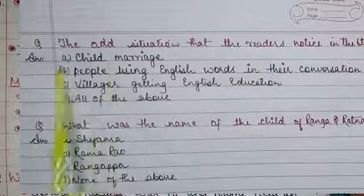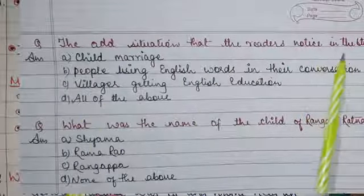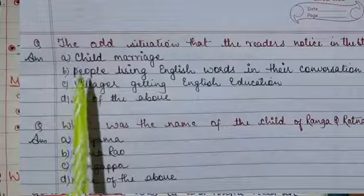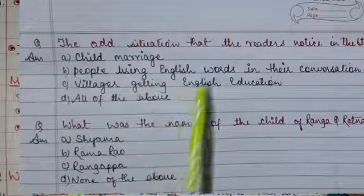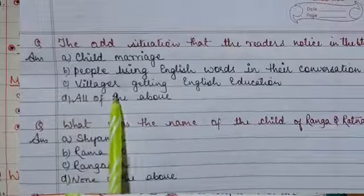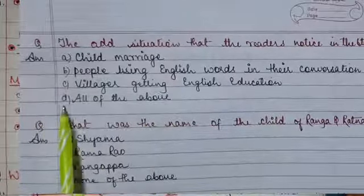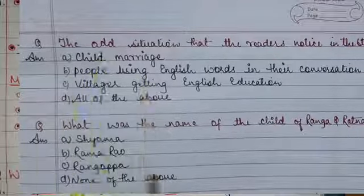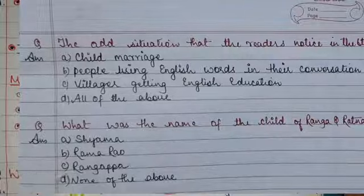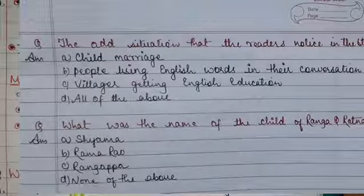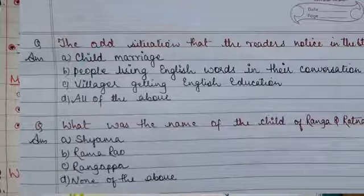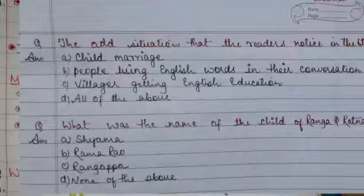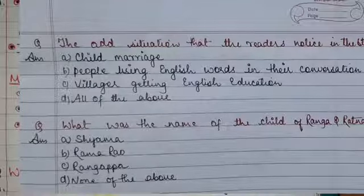The odd situation that readers notice in the story is: Option A: Child marriage, Option B: People using English words in conversation, Option C: Villager getting English education, Option D: All of the above. Option A is correct — child marriage is the odd element in the story. Even after getting educated, Ranga preferred to marry a girl who was just eleven years old, creating a contrast between education and this social practice.